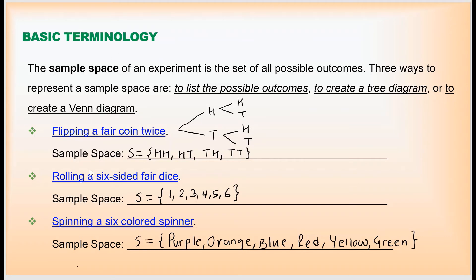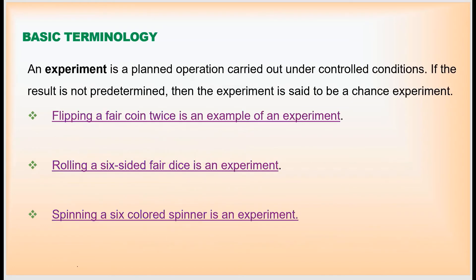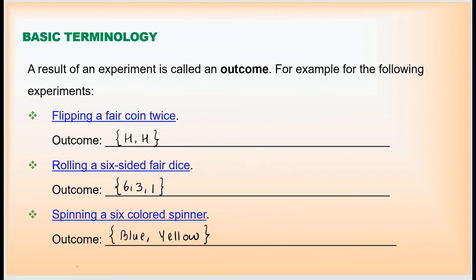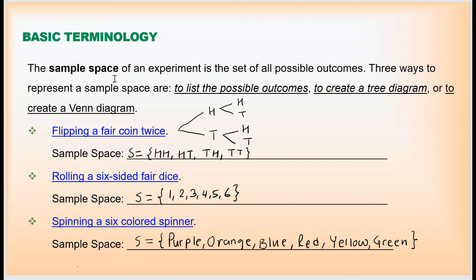So these three terms are very important in probability: experiment, outcome, and sample space. Before we move on to the formal definition of probability, you must know how to write the sample space, so we are going to practice this.